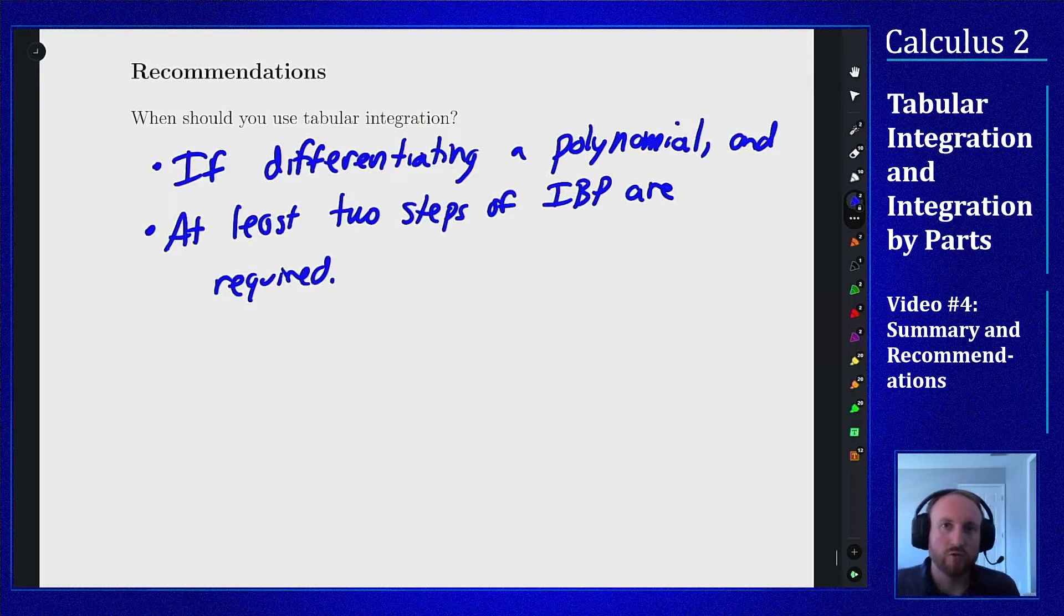In my experience, two steps is around the break-even point in the sense that the time investment to build and set up the table is worth it if you're doing at least two steps. But if you're doing two or less, it's less time to do the actual integration by the formula directly. So two, take your pick if you want to do it or not.